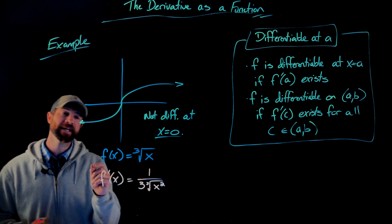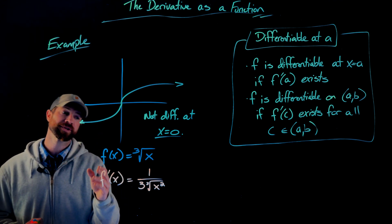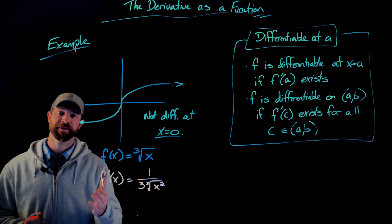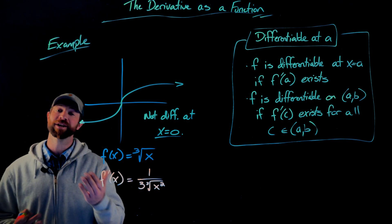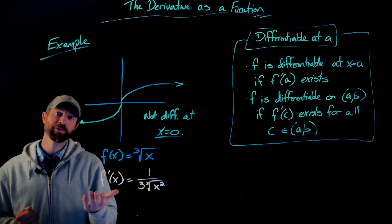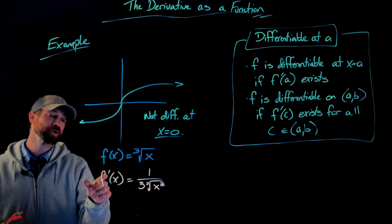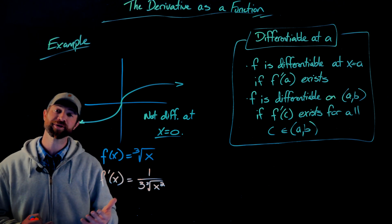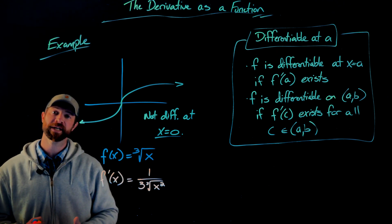But the issue here is that actually at x equals zero, the cube root of x function has a vertical tangent. So the slope is undefined, and given that the derivative is talking about slope, it's also undefined. Algebraically, we could see that with this right here, the derivative. If we try to plug in a zero into the derivative function, we'll see that we also get this division by zero issue.